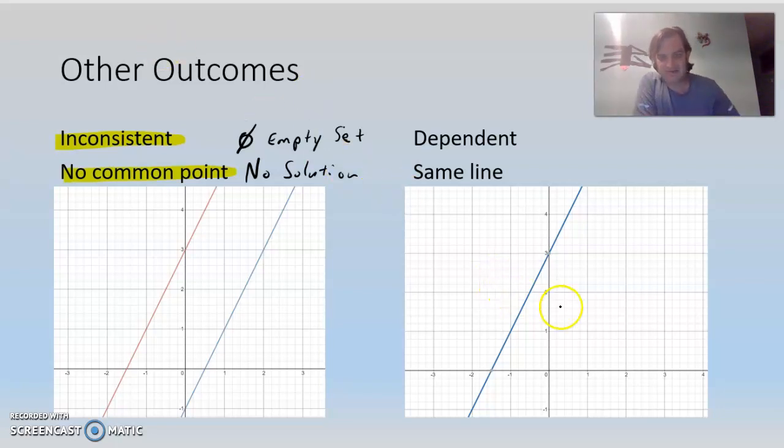Now, the second graph on the right, you can't tell it from what we have here. But really what I have here is the two different lines graphed, but they are basically the same graph. So the equations may have looked different, but they plotted out the same way.